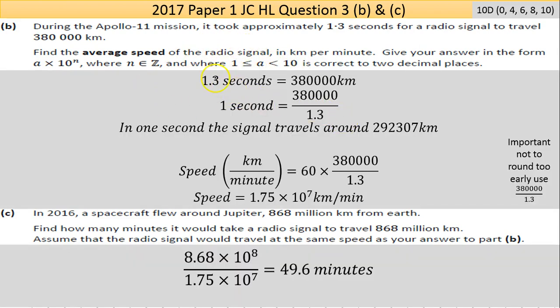I'm writing out the statement they gave me: 1.3 seconds equals 380,000 kilometers. Even if I didn't know what I'm doing, I might as well manipulate this. If I find out how much it travels in one second, I can divide both sides by 1.3. So 1.3 divided by 1.3 gives me 1; 380,000 divided by 1.3 gives me 292,307 km per second.